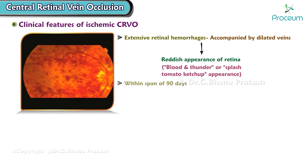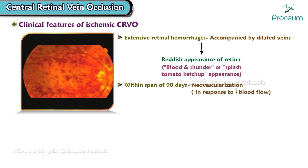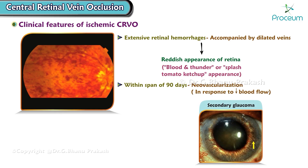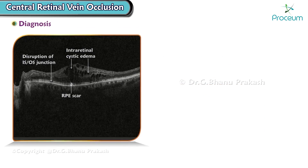Within a span of 90 days, neovascularization may occur as a response to the reduced blood flow, leading to the development of secondary glaucoma.